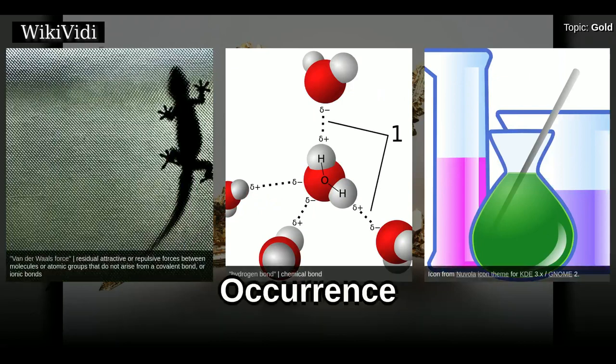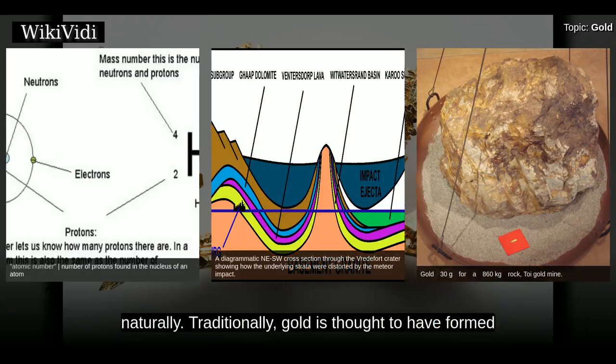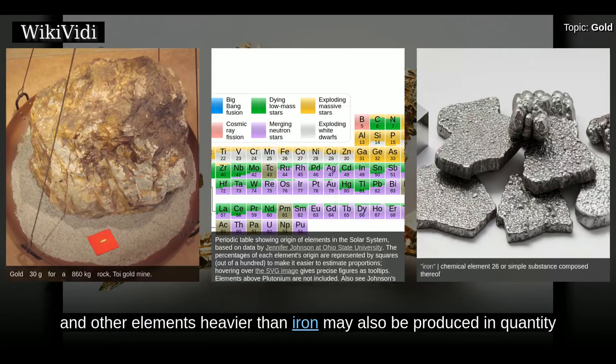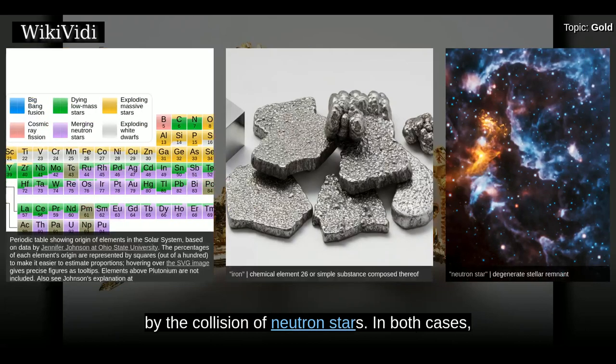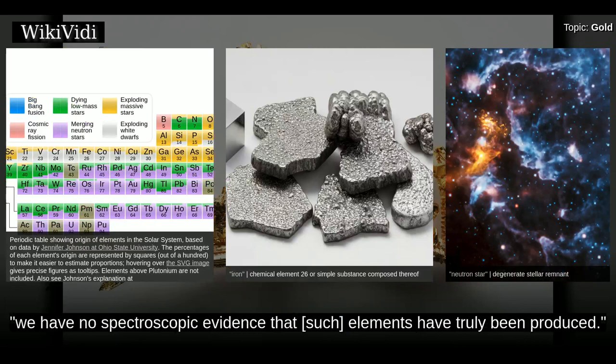Gold's atomic number of 79 makes it one of the higher atomic number elements that occur naturally. Traditionally, gold is thought to have formed by the r-process in supernova nucleosynthesis, but a relatively recent paper suggests that gold and other elements heavier than iron may also be produced in quantity by the collision of neutron stars. In both cases, satellite spectrometers only indirectly detect the resulting gold, and we have no spectroscopic evidence that such elements have truly been produced.